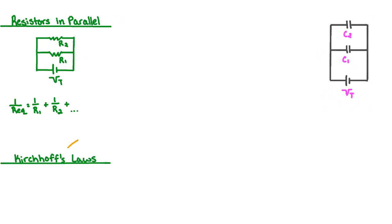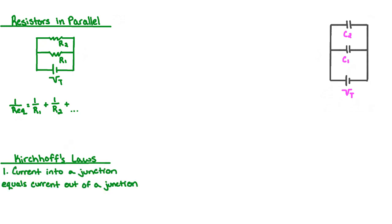We also need to recall a couple of laws known as Kirchhoff's Laws that we can apply to our circuit. In the first law, the current into a junction equals the current out of a junction. We can turn this rule into an equation by looking at the junction between resistor R1 and resistor R2. The total current from the battery, IT, is equal to the current that splits to go through the first resistor, I1, plus the current that splits to go through the second resistor, I2, and so on for as many branches as we have.